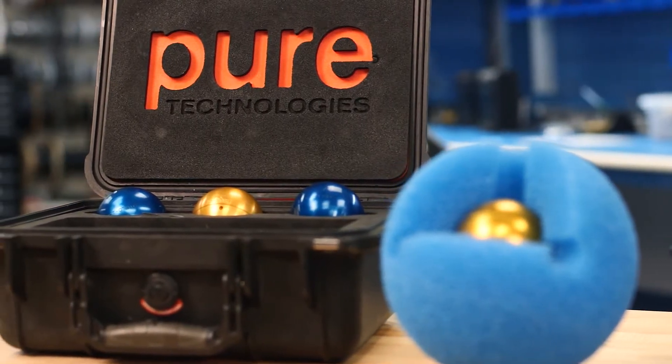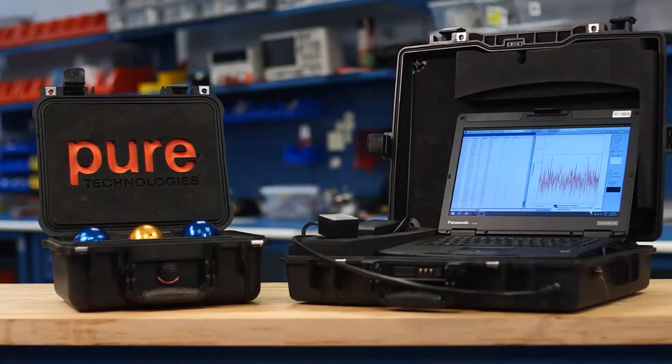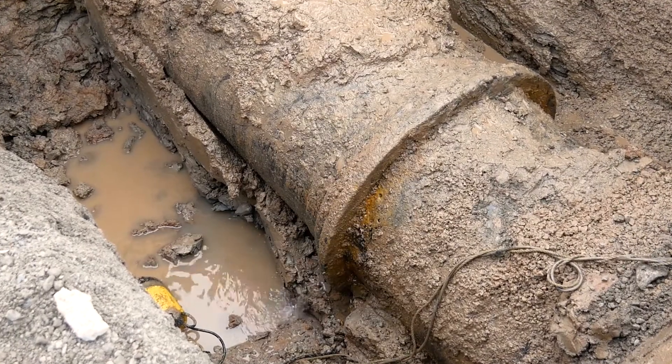Based on thousands of miles of experience, we're finding three to four times more leaks than trunk main correlators, which means SmartBall is a great tool when you want to find all the leaks and reduce your non-revenue water.